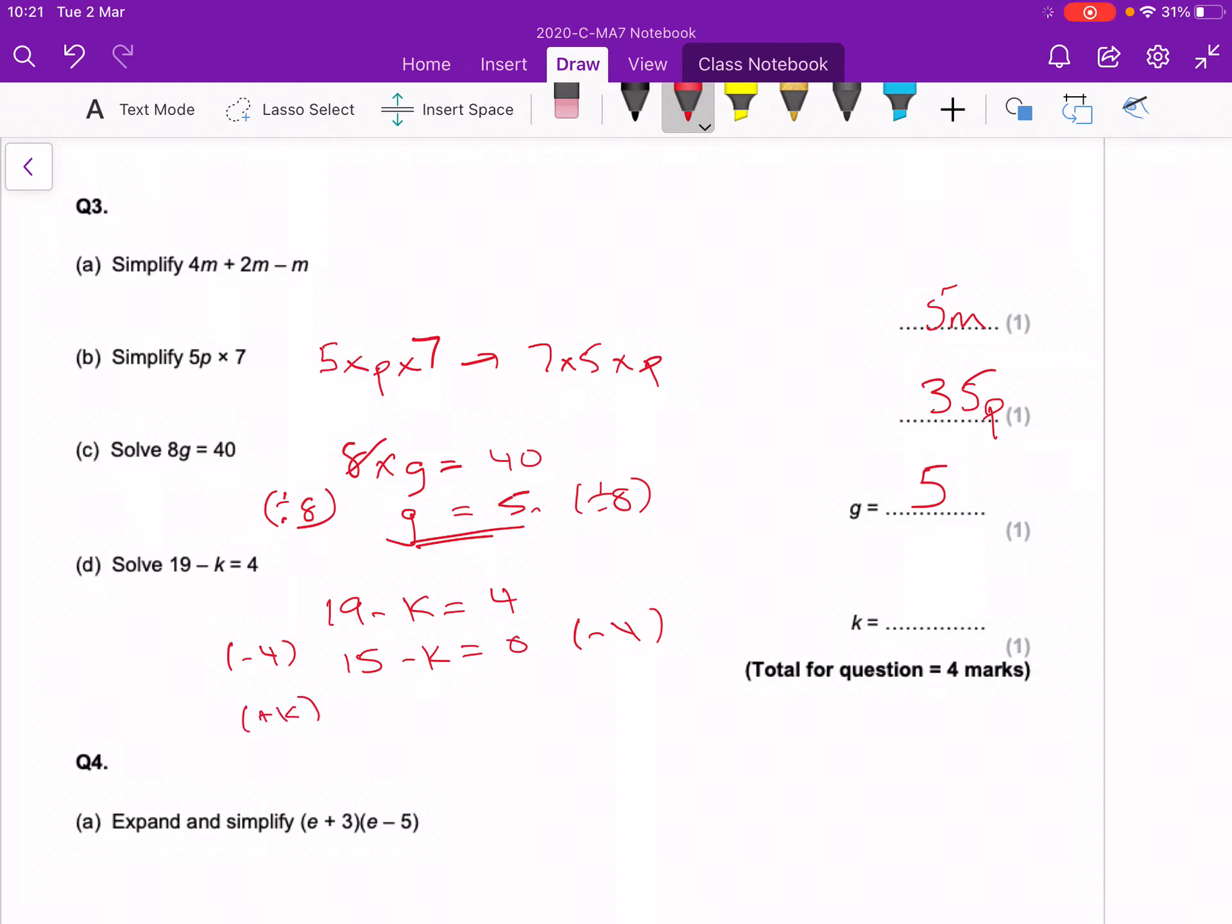Add on k to both sides, and then you'll get that 15 equals k, so you'll find an answer for number 3.